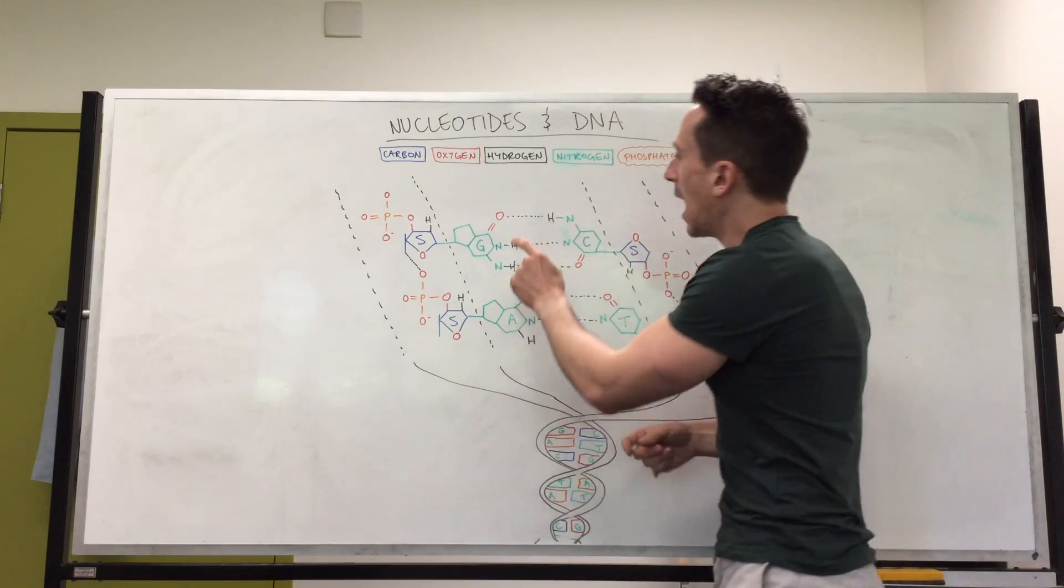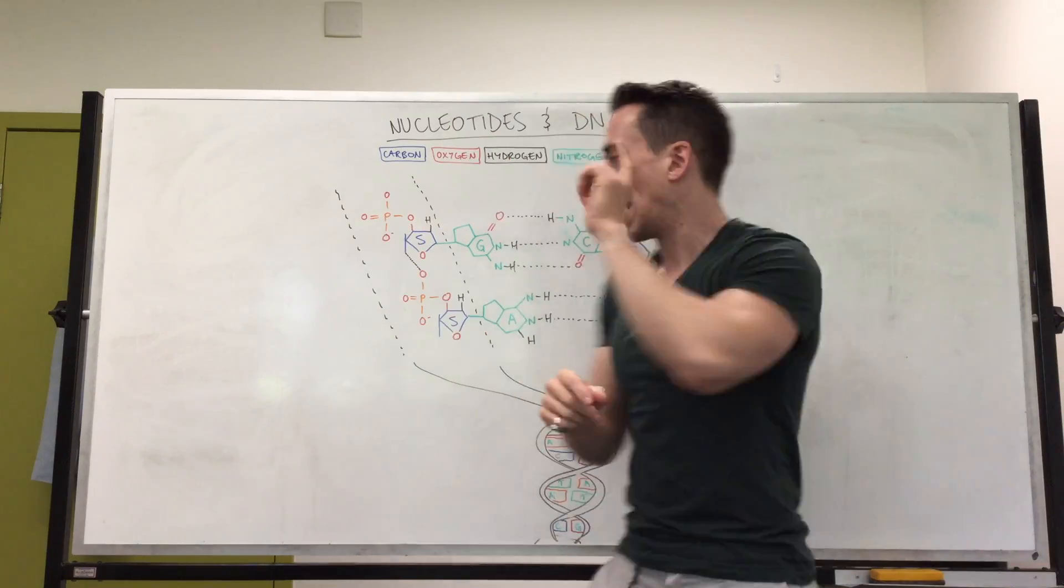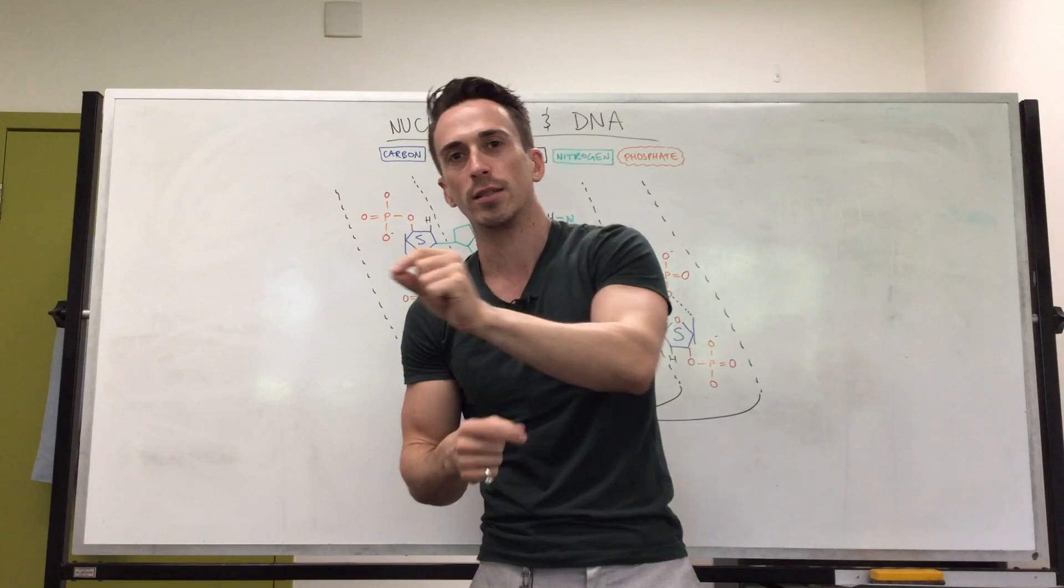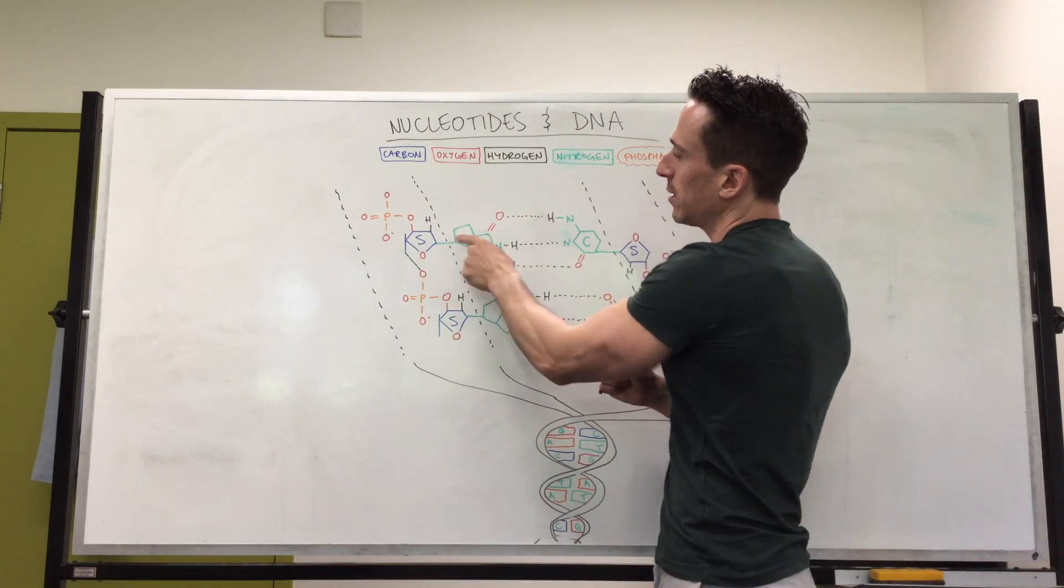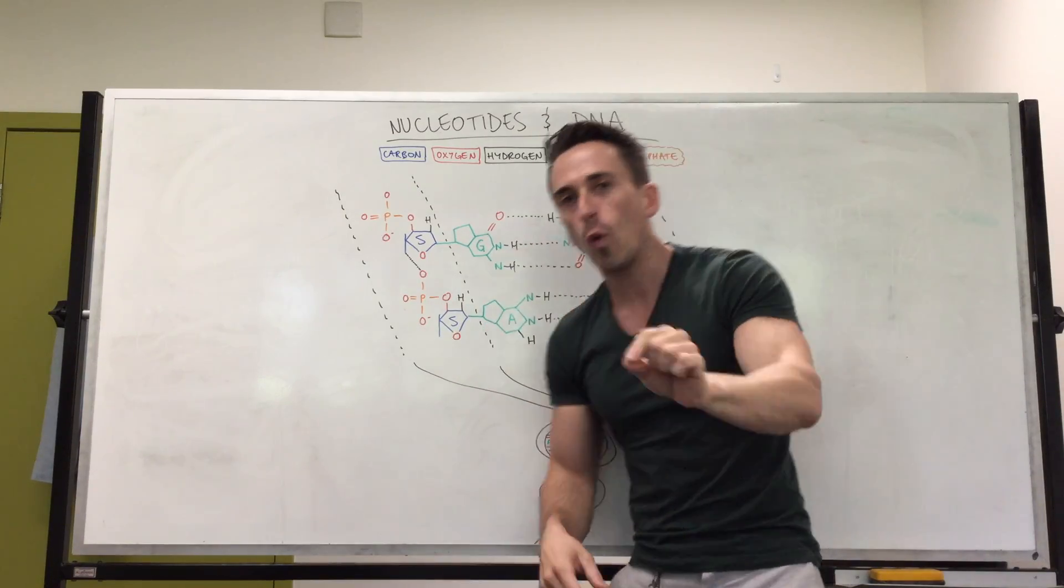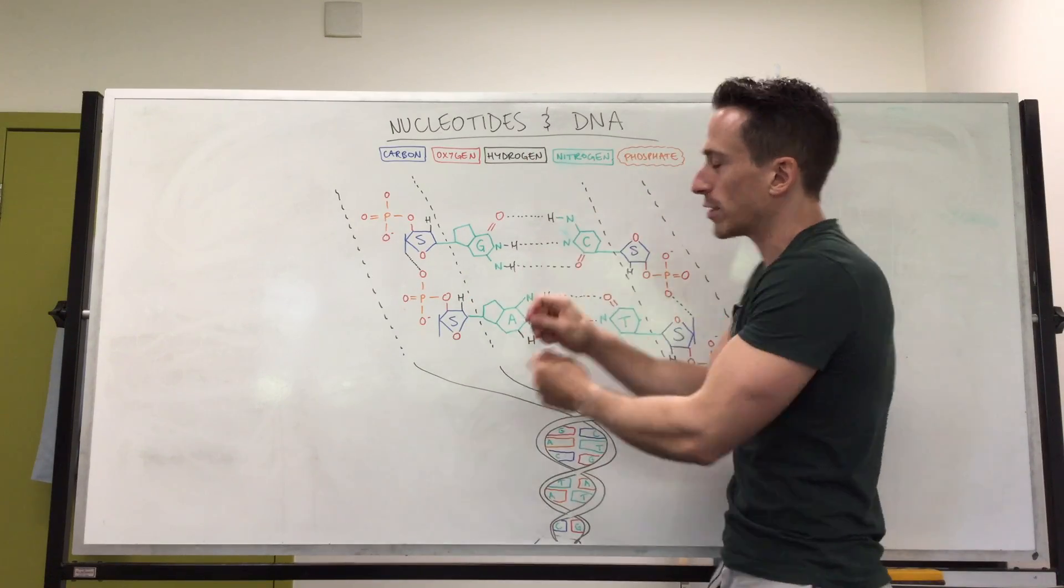Now those rungs are the conversations that are being had between the nucleotides and always a G will always speak to a C, that's a guanine always speaking to a cytosine. They will always, if a C is on this side it will talk to a G on that side and vice versa. An A which is an adenine will always talk to a T on the other side which is thymine and vice versa.